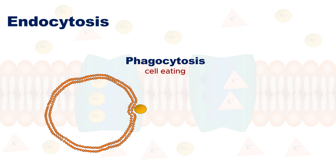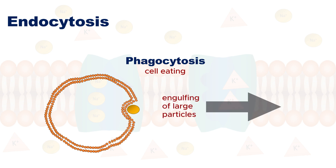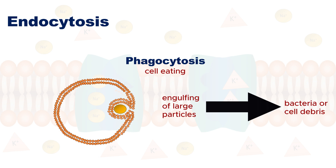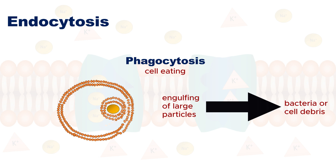Phagocytosis involves the engulfing of large particles, such as bacteria or cell debris. The plasma membrane surrounds the particle, creating a vesicle that brings it into the cell for digestion.